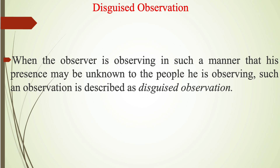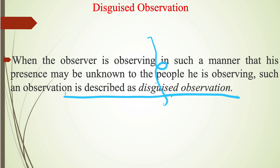In disguised observation, the observer observes in such a manner that his presence may be unknown to the people he is observing. Such an observation is described as disguised observation. It is also a part of indirect oral observation. There is no direct questioning involved; the observation is done by the researcher indirectly, so the respondent cannot detect that someone is observing their nature or behavior.